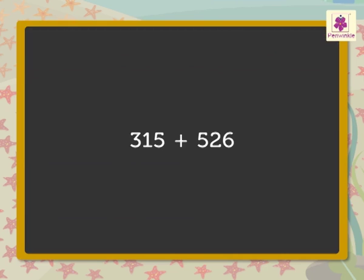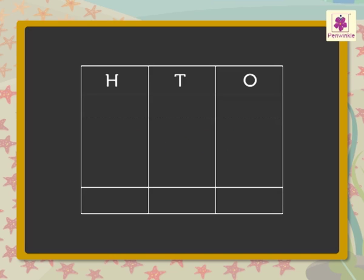Now, as you know, we can also directly add the numbers 315 and 526. Let us look at the process of addition of these numbers. Step 1: Write the numbers in the hundreds, tens, and ones columns.